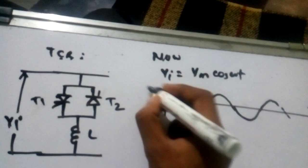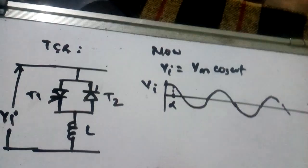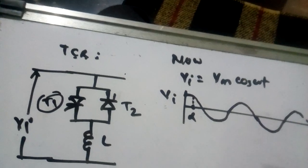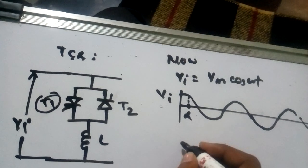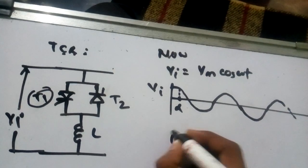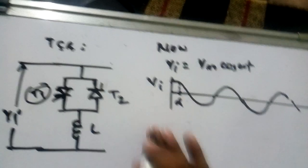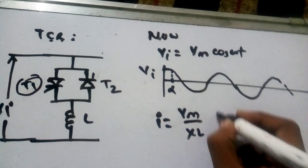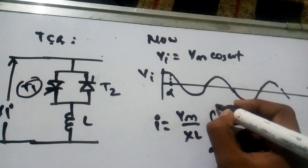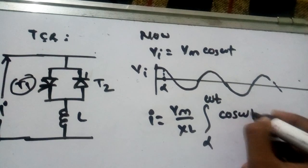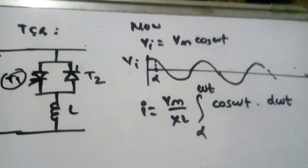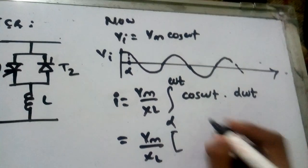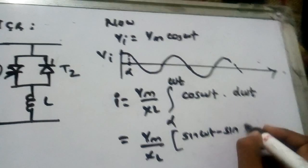At angle alpha I will trigger this thyristor. Then the current I is equal to Vm upon XL, integral from alpha to omega t of cos omega t d omega t.